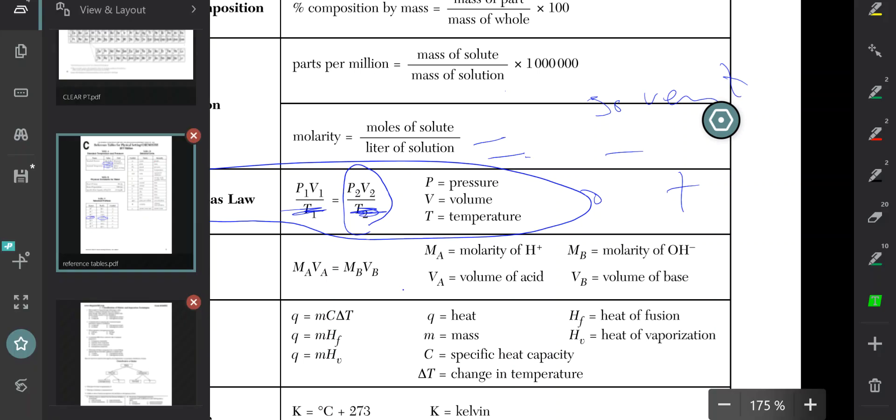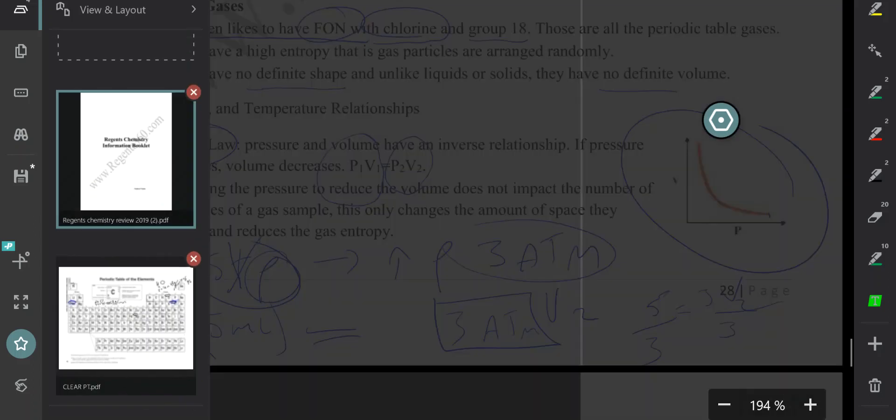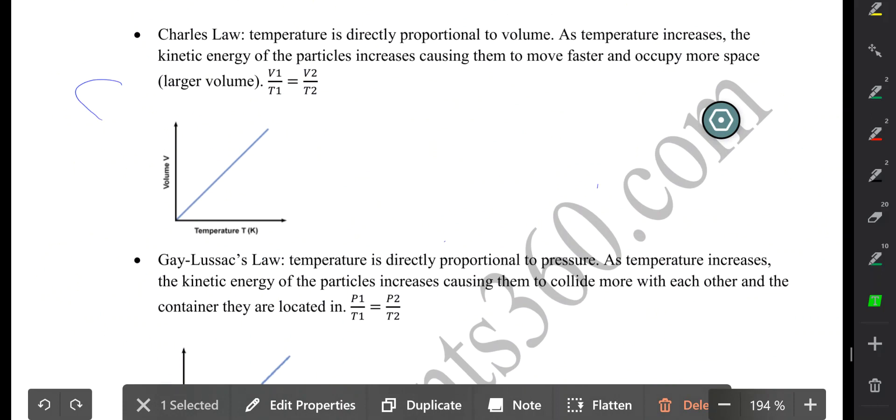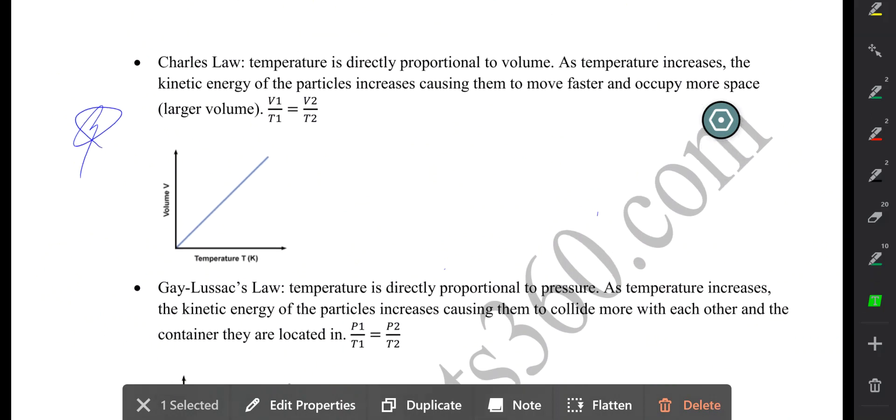So here's a little bit more about Charles's law. Charles's law states that the temperature is directly proportional to the volume. If you increase the temperature, the kinetic energy of the particles will increase causing them to move faster and occupy more space eventually.